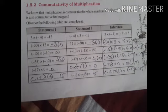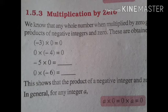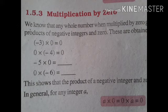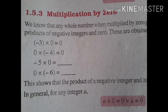Write another four examples for yourself and verify that A into B is equal to B into A. Next property: multiplication by 0. We know that any whole number when multiplied by 0 gives 0. Observe the following examples. Minus 3 into 0 is equal to 0. 0 into minus 4 is equal to 0. Minus 5 into 0 is equal to 0. 0 into minus 6 is equal to 0. This shows that the product of negative integers and 0 is 0. We can say A into 0, or 0 into A, is equal to 0. This is the property of multiplication by 0.